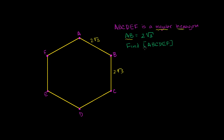They want us to find the area of hexagon ABCDEF. The best way to find the area — especially of regular polygons — is to try to split it up into triangles. Hexagons are a bit of a special case; maybe in future videos we'll think about the more general case of any polygon.